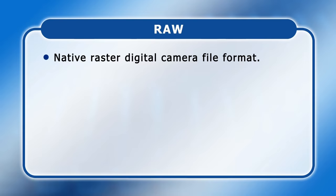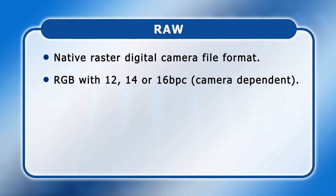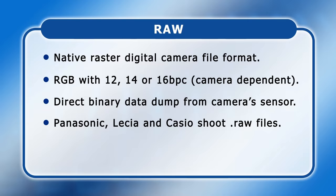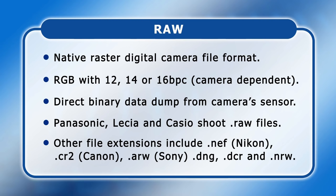Raw is a native raster digital camera format that preserves information that's lost when shooting JPEG or TIFF files. It offers an RGB colour space with either 12, 14 or 16 bits per channel, depending on the camera model. Each image is, in effect, a direct binary dump from the camera's sensor, so no data is thrown away by the camera's internal image processing. Raw files can be read by Photoshop and other major image editing programs, but the majority of image viewing and editing applications cannot load a raw file. Cameras from Panasonic, Leica and Casio use the .raw extension, Nikon raw files are usually .NEF, Canon cameras save .CR2 files, and other raw extensions include .ARW (Sony), .DNG, .DCR and .NRW.